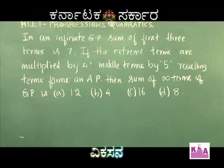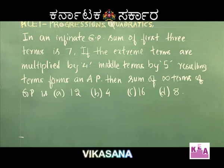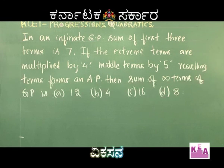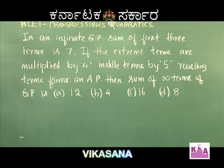In an infinite GP, the sum of the first 3 terms is 7. If the extreme terms are multiplied by 4 and the middle term by 5, the resulting terms form an AP. Find the sum of infinite terms of the GP. Options: A) 12, B) 4, C) 16, D) 8.